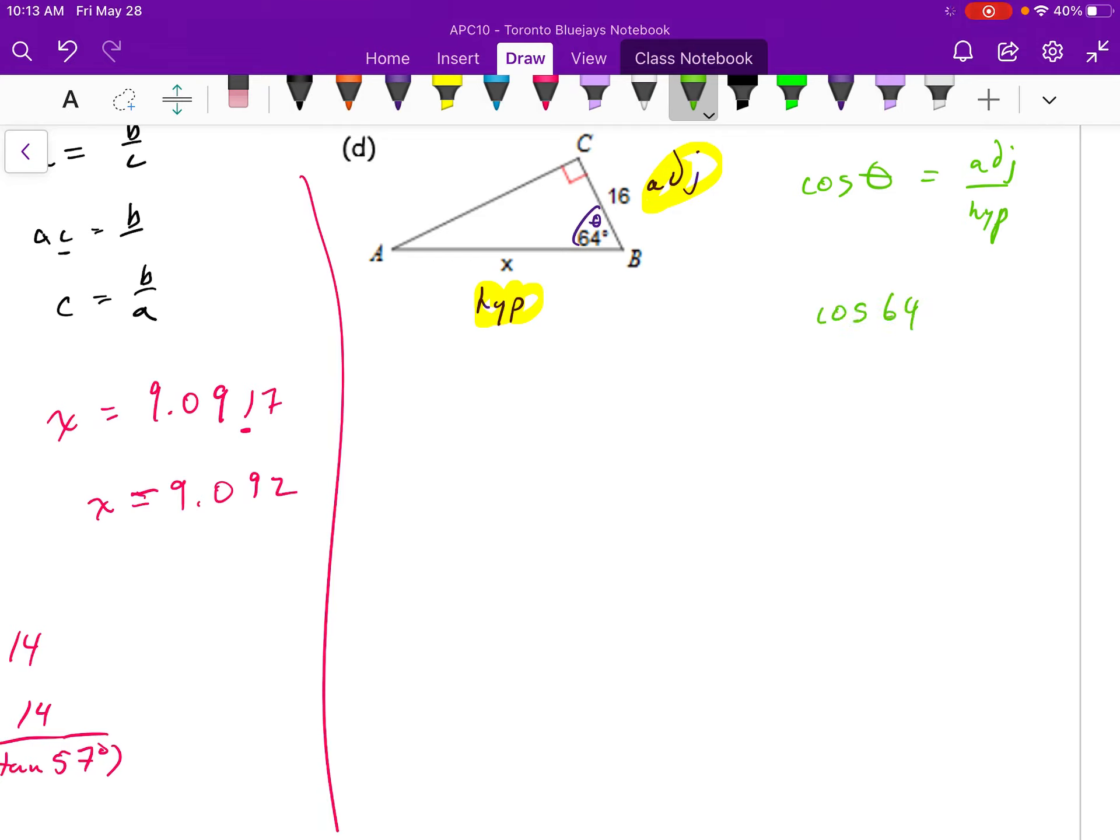I'm going to simply plug in my formula. Multiply both sides by x. Then, to isolate for x, I'm going to divide both sides by the cosine of 64 degrees.